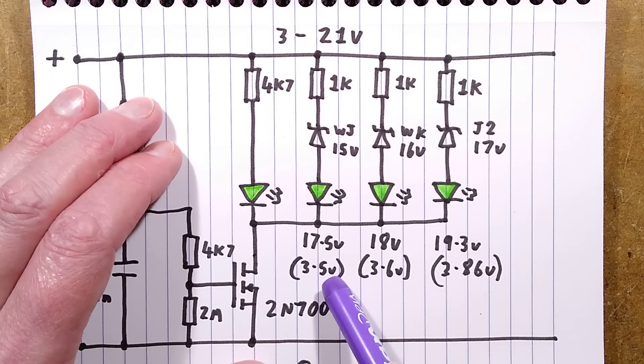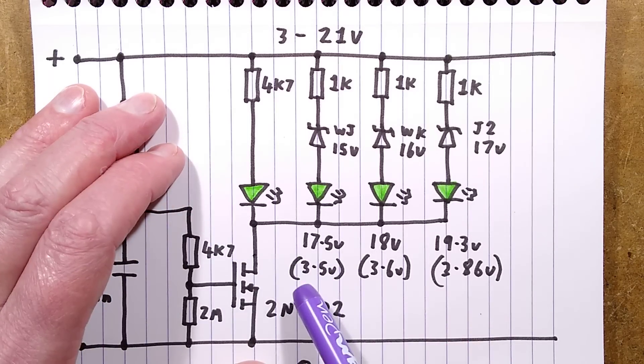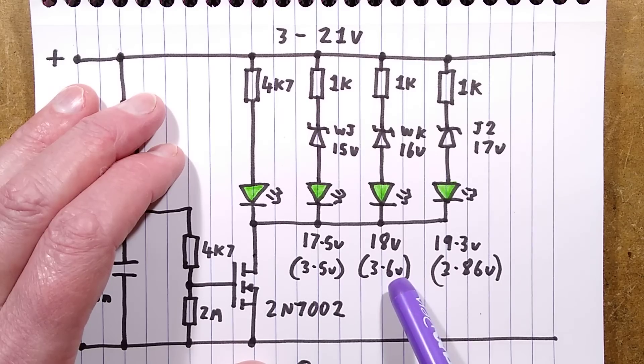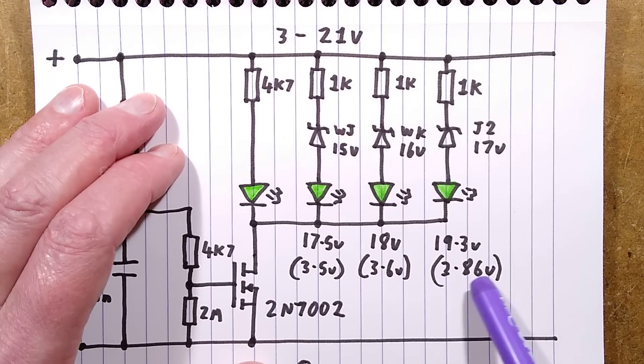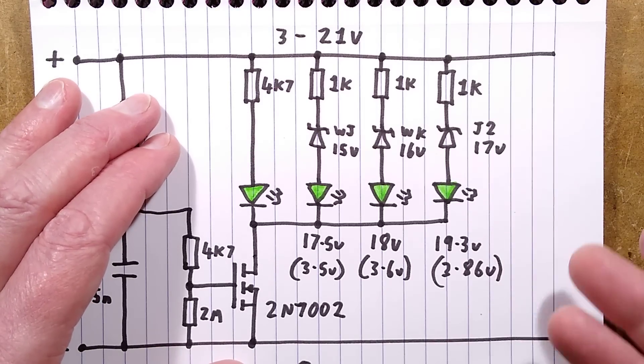However, this equates to a rough cell voltage of 3.5 volts at the sort of lowest LED here, it will exclude the power-on LED, so 3.5 volts, and the next one is a cell voltage about 3.6 volts because it's five cells in series, and then 3.86 volts.